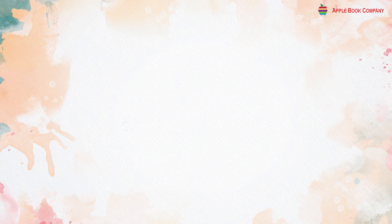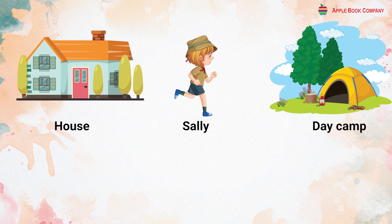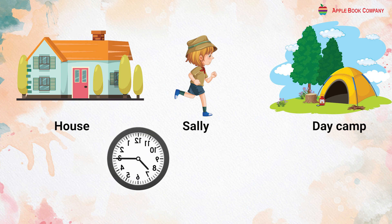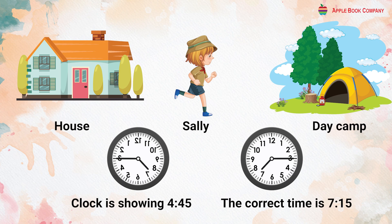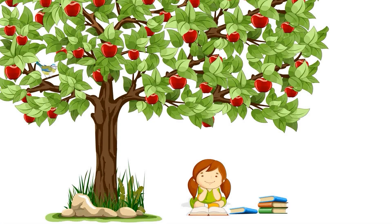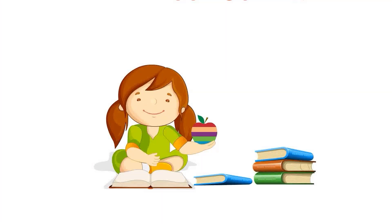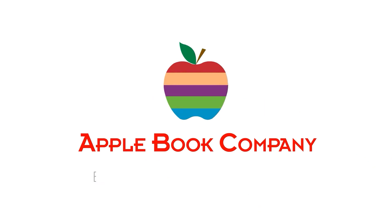HOTS: Sally leaves her house in the morning to go to day camp. Just as she is leaving, she looks at the reflection of the clock in the drawing room. There are numbers on the clock, so Sally makes an error in reading the time. She assumes the clock is showing 4:45. What is the correct time?